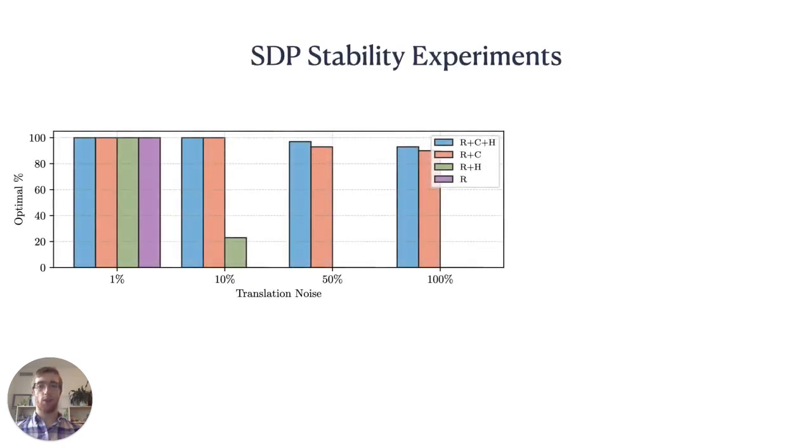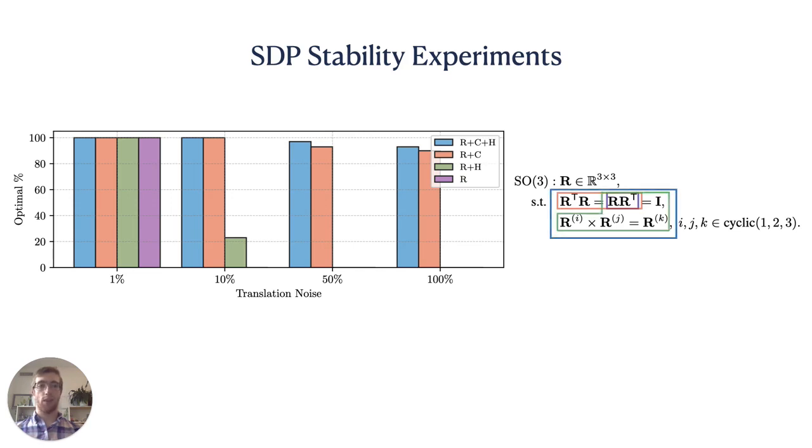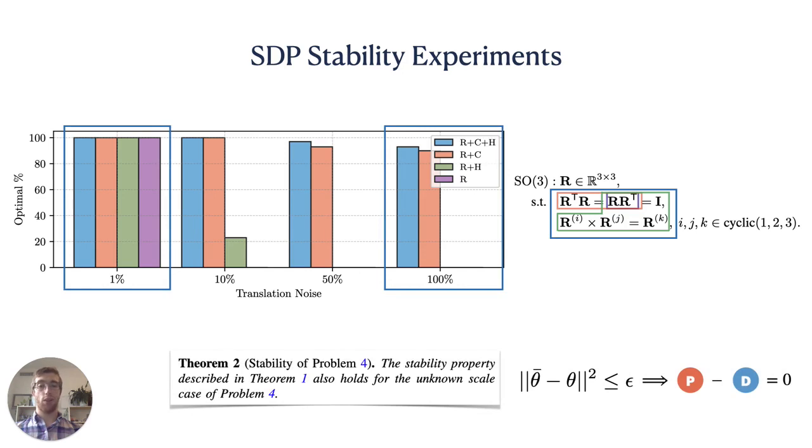In order to test the theoretical predictions of the previous section, we experimented with injecting different levels of noise into our synthetic measurements. For each level of noise, we ran the algorithm on 100 trials with different samples of the same noise distribution. This bar chart displays the percentage of trials where the duality gap was in fact zero. Each colored bar represents the inclusion of a different subset of the SO3 orthogonality constraints. Row orthogonality only, row and column orthogonality, row orthogonality and handedness, and all three constraint sets. The stability predicted by theorem 3 is supported by the 100% optimality for 1% translation noise for all four constraint sets. Furthermore, we see that adding handedness and redundant orthogonality constraints strengthens the stability of our SDP relaxation all the way up to and including unrealistic noise that practically drowns out any signal.